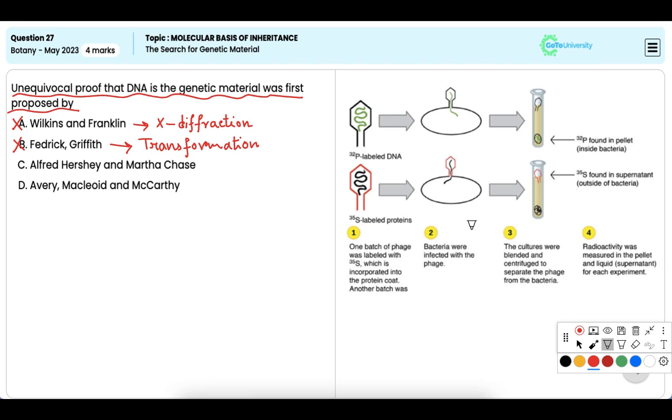They used bacteriophages—viruses that infect bacteria—and demonstrated that it was DNA, not protein, that carried genetic information during viral replication. Hence, it is the correct option.